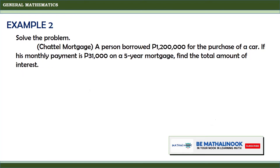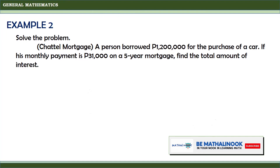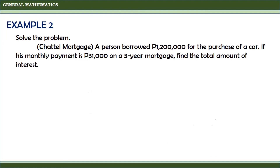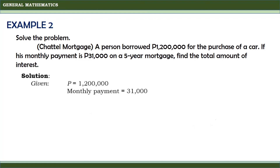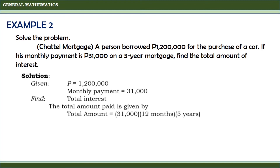Let us have another example. A person borrowed 1,200,000 pesos for the purchase of a car. If his monthly payment is 31,000 pesos on a 5-year mortgage, find the total amount of interest. According to the problem, the principal is 1,200,000 pesos and the monthly payment is 31,000 pesos. The total amount paid is given by 31,000 multiplied by 12 months times 5 years, because the person will be paying 31,000 pesos monthly within 5 years.